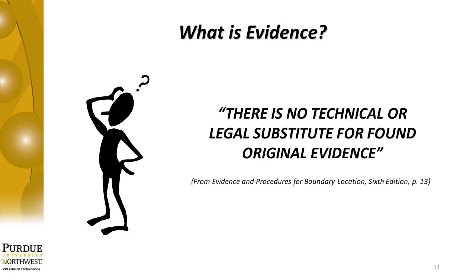Moving forward into chapter two — the title being the same as this lecture: Definition, Scope, and Nature of Evidence. On the first page, going over the historical concept of evidence, it begins to brush the edges of what evidence is actually about. You have to ask yourself: just what is evidence? Not from the standpoint of whether something is evidence of a point on the ground, but from the sense of the courts and past court cases — how is evidence described? There is no technical or legal substitute for found original evidence.